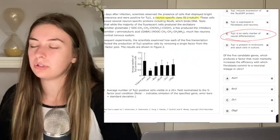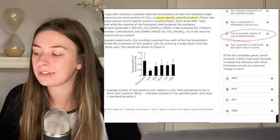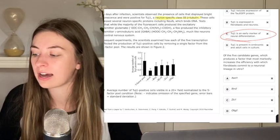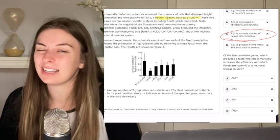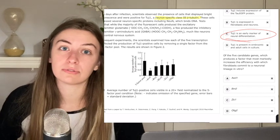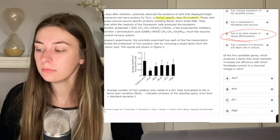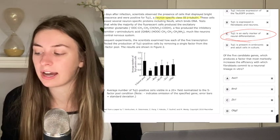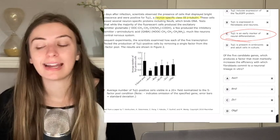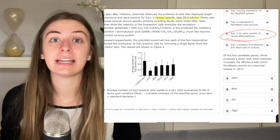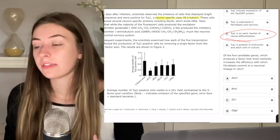Now the questions down a little bit more simple of the five candidate genes, which produces a factor that most markedly increases this neural differentiation that we're trying to do. We're basically asking which factor is most important in this experiment and in this neural differentiation. That's what we're asking.